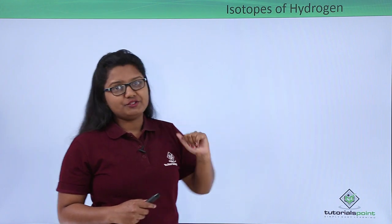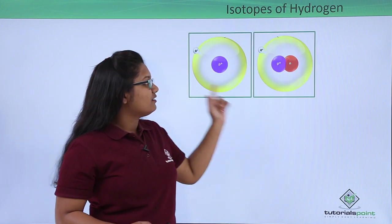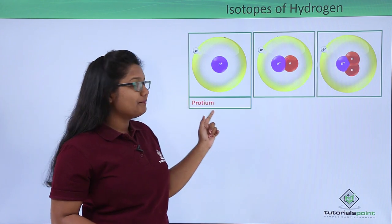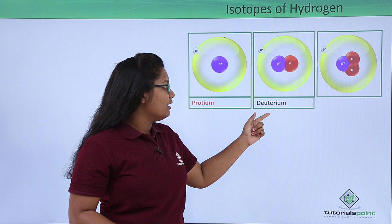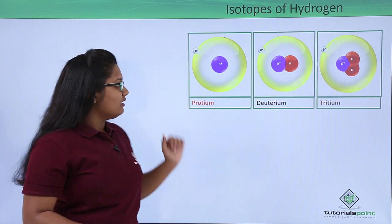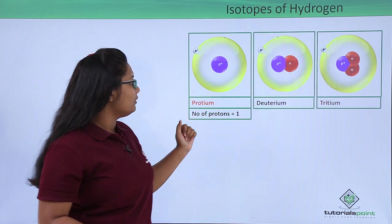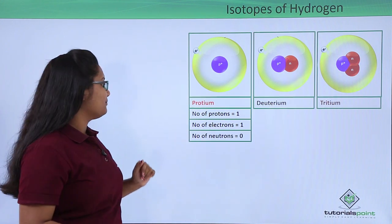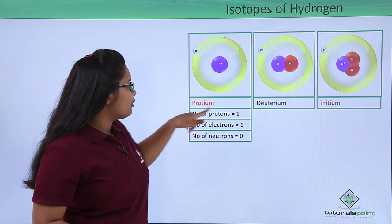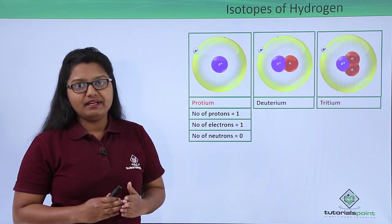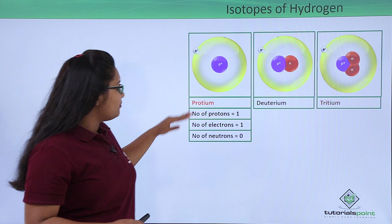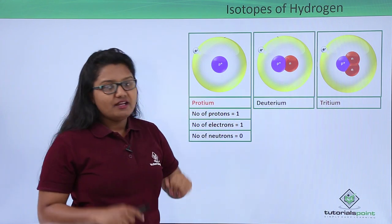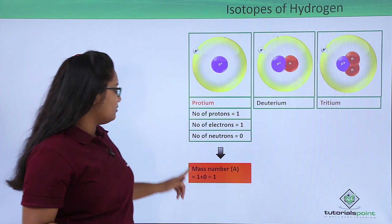Isotopes of hydrogen: hydrogen has 3 isotopes — protium, deuterium, and tritium. Protium has 1 proton, 1 electron, but no neutrons at all. So its atomic number is 1, and with 0 neutrons and 1 proton its mass number is 1.